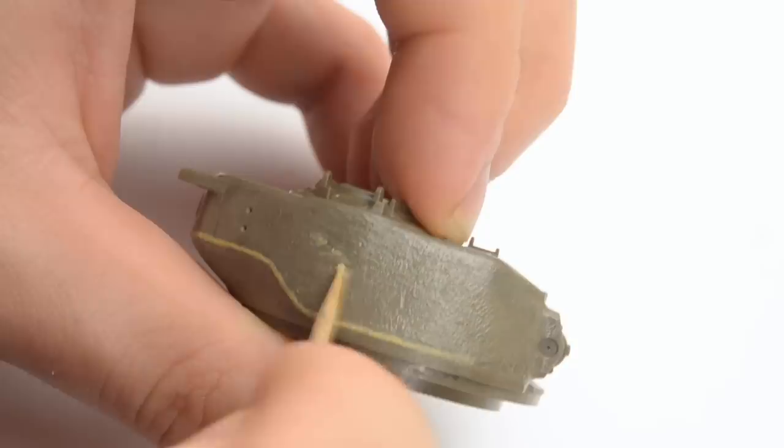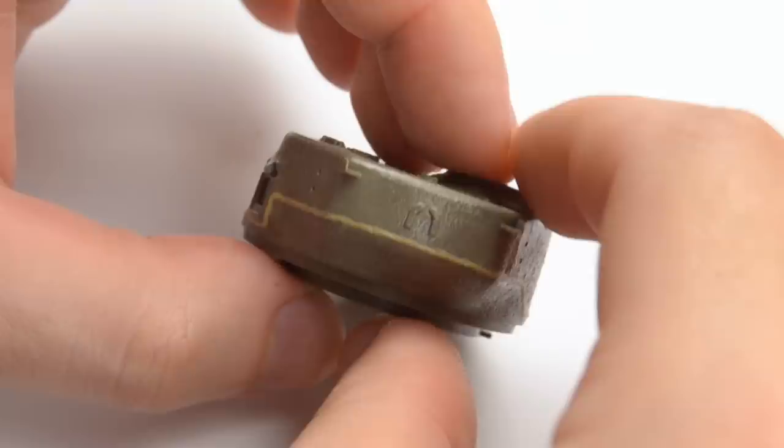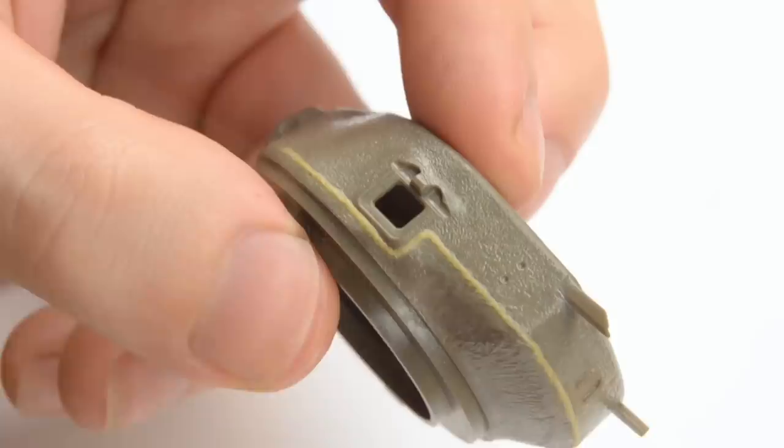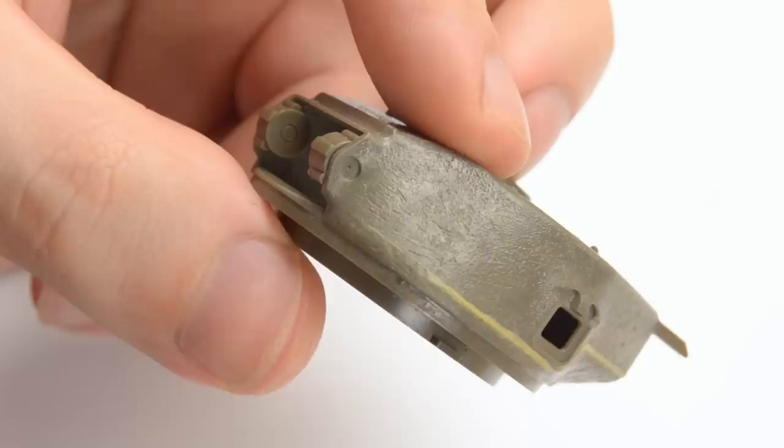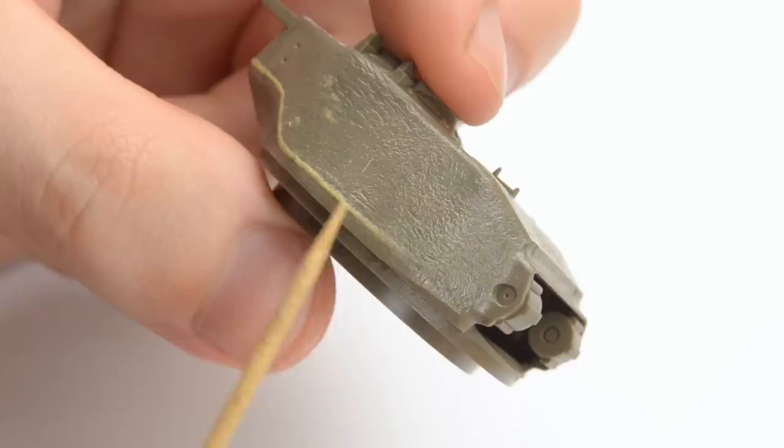Now we need to let the putty harden for a few hours, so in the meantime we can work on another part of the model, but I'd like to point out a few specifics on this turret. The seam line is most evident here, and it almost completely disappears towards the front of the turret on both sides. That's something I'll have to keep in mind as we progress further, but don't worry, we're almost done.